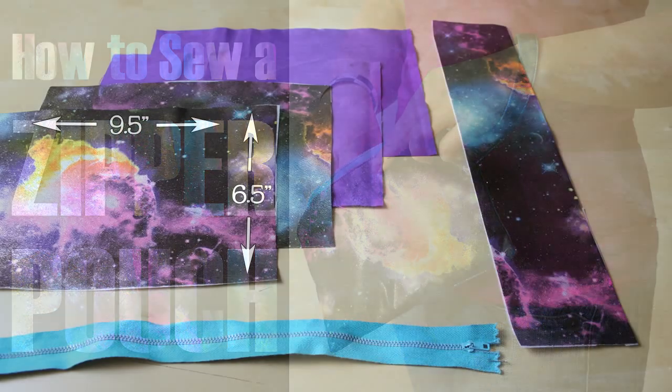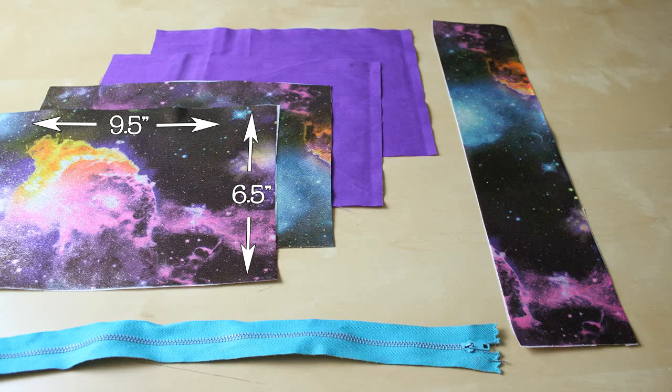Step 1. Cut your fabric. You'll need 4 rectangles for your bag, 2 for the outside and 2 for the lining. My example is a nice size for a wristlet clutch, but you can use this same technique for any size you want. My outer and lining fabrics measure 9.5 inches wide and 6.5 inches long.